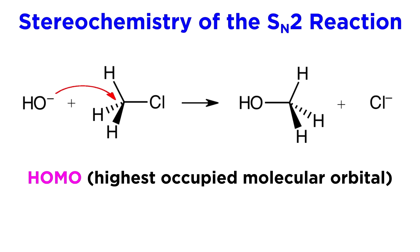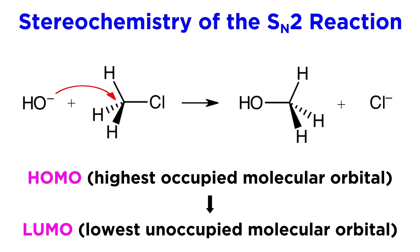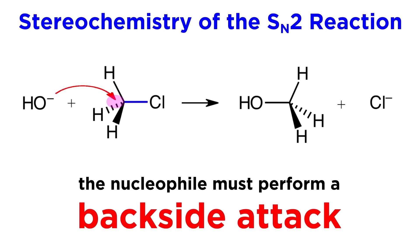A nucleophile will always take electrons from its HOMO, or highest occupied molecular orbital, and dump that electron density into the LUMO, or lowest unoccupied molecular orbital on the substrate. In this case, the orbital it needs to access is 180 degrees from this carbon-chlorine bond. We call this a backside attack. So in SN2, the nucleophile must always approach from precisely the opposite direction of the bond to the leaving group.